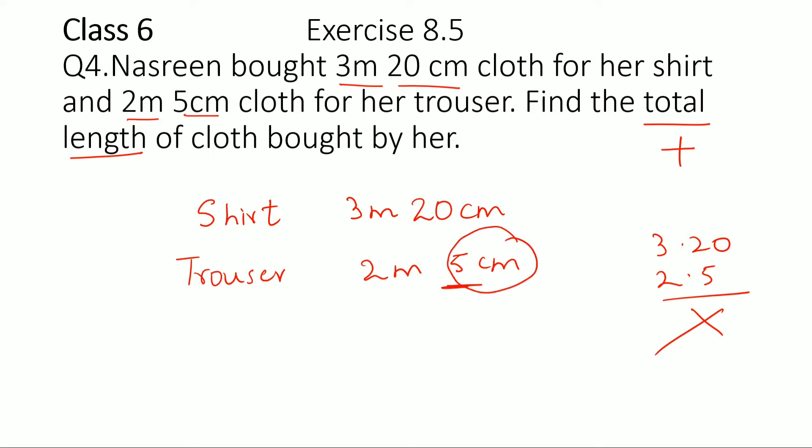So what we need to do is we need to convert both the numbers into meters first. So we know that 3 meter 20 centimeter can be written as 3 meter plus 20 by 100. Whenever we want to convert centimeter to meter, we divide by 100, and this is in meter. So this would become 3.20 meter.